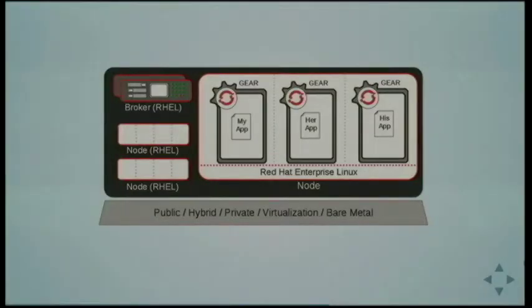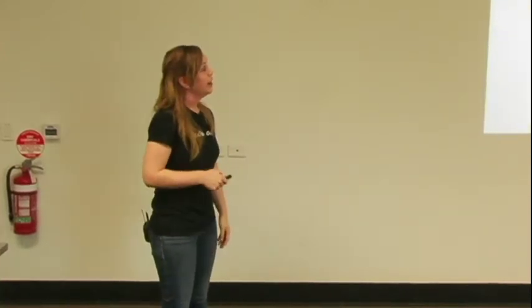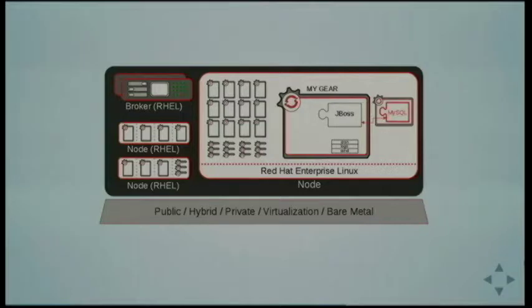Under the hood for OpenShift V2: it will run anywhere that Red Hat Enterprise Linux runs — on your local machine, on OpenStack, on EC2 (which is what OpenShift.com uses). You've got a broker that manages orchestration of a number of nodes. On each node you have containers called gears, and your apps run within those. Containerization is done using SELinux and cgroups. Within these gears you also have what we call cartridges — the different technologies you plug in. Gears can also be idled down for efficiency.